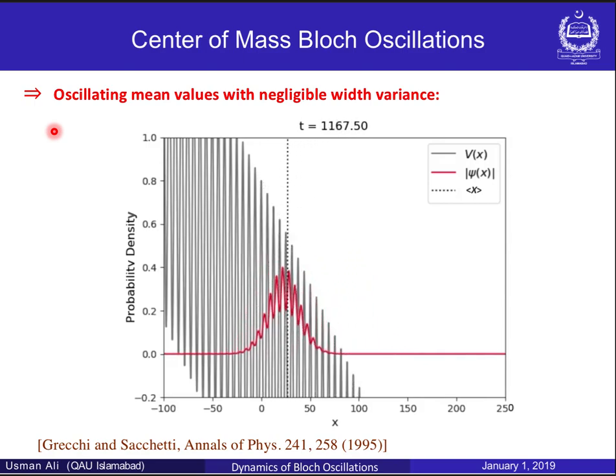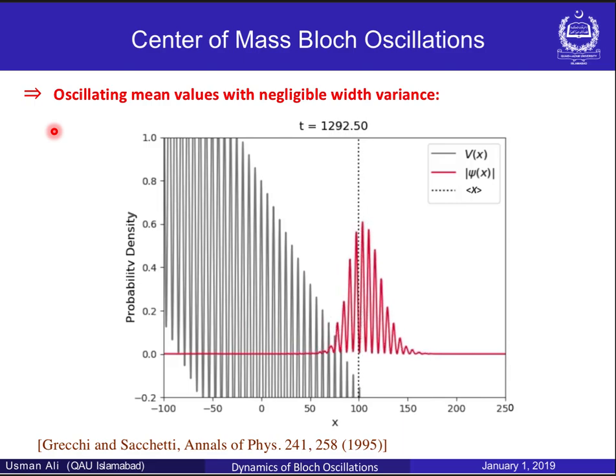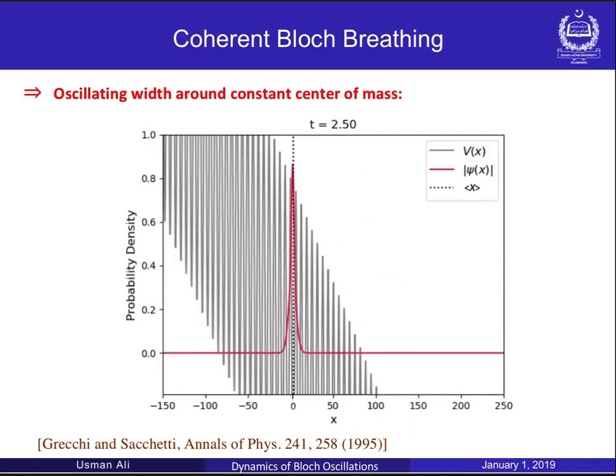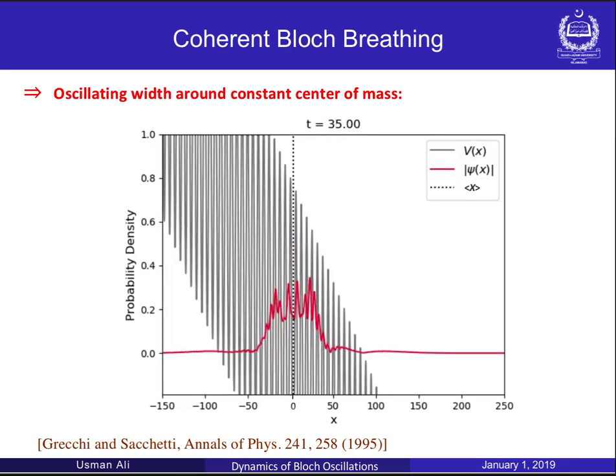For a narrow Gaussian distribution, the wave packet is sharply localized inside a single lattice well. The probability amplitude widens and then shrinks, while the center of mass remains constant. These width oscillations are known as Bloch breathing modes.